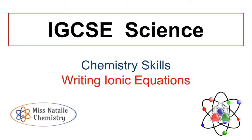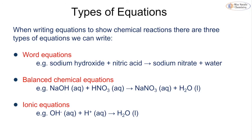This video is going to be focusing on a key skill that we need for IGCSE chemistry, and that is how we write out ionic equations. When we're looking at any type of chemical reaction, we can write out a number of different equations. We can look at a word equation, for example sodium hydroxide plus nitric acid giving us sodium nitrate and water.